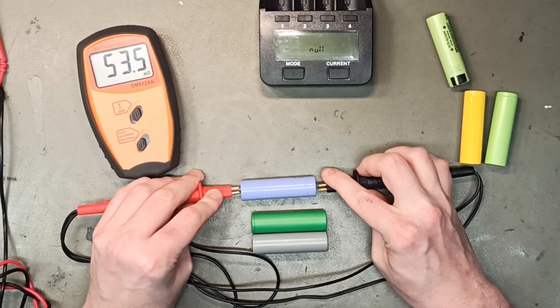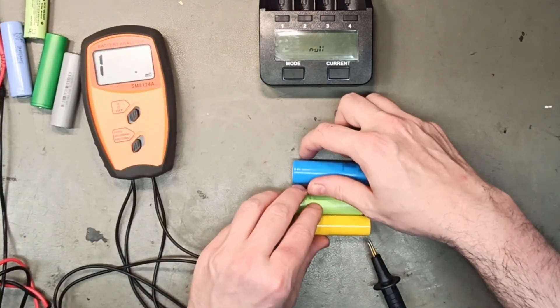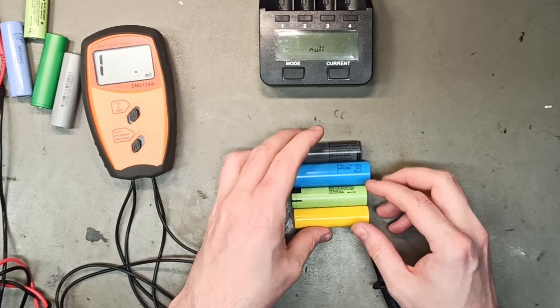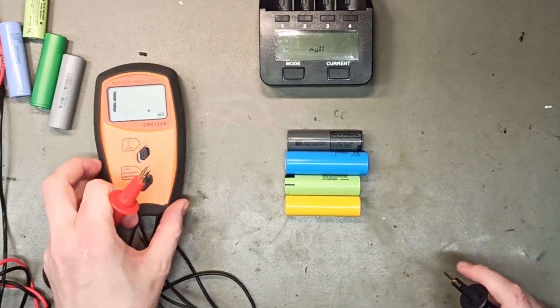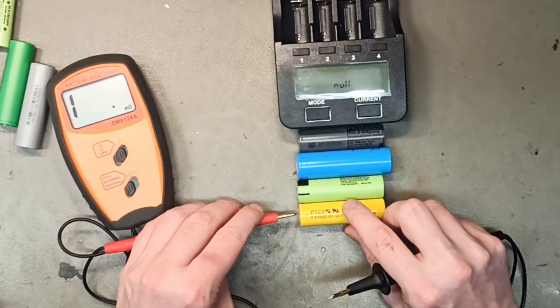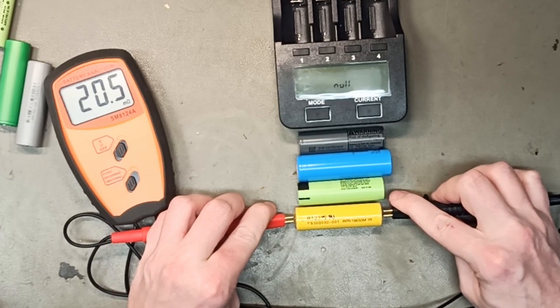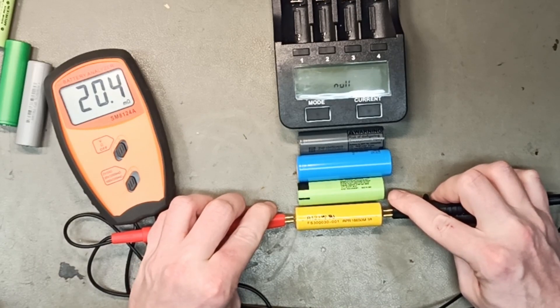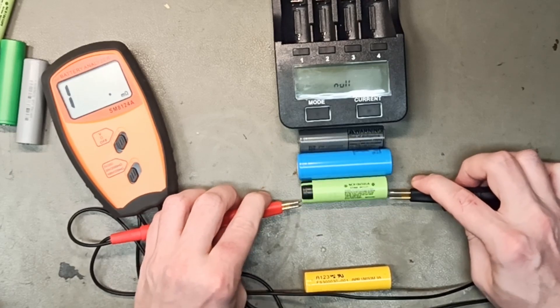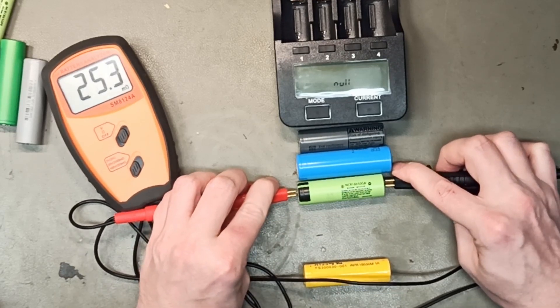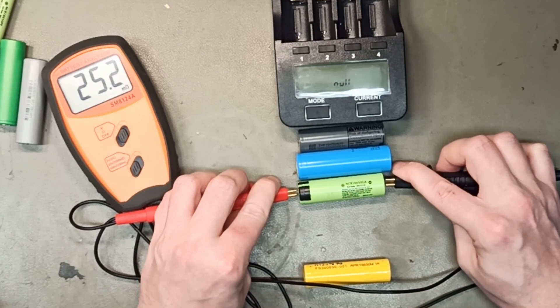This one has 53.5, that's pretty high so let's try four new cells and I'm guessing all of these will be at least 25 or smaller. Here we have one A123 LiFePO4 cell, 20.4 that's okay. Here we have Sanyo GA China version 25.5.